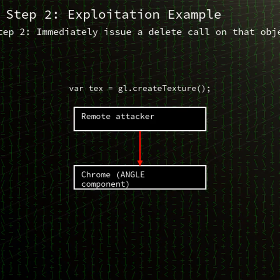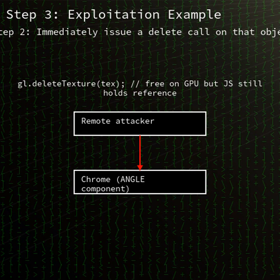The vulnerability affects Google Chrome versions earlier than 139.0.7258.154. ANGLE, the Almost Native Graphics Layer Engine for translating graphics calls, exists in Chrome's rendering stack on Windows, macOS, Linux, and Chrome OS.